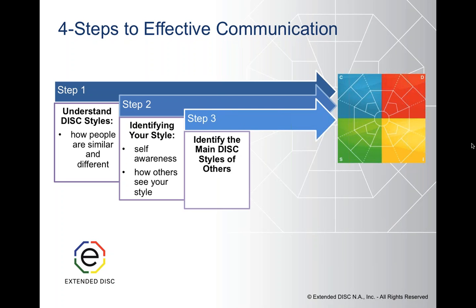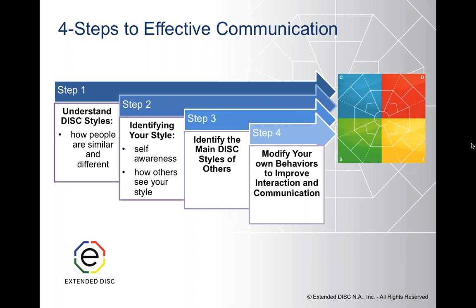Step three is one of the strengths of the DISC model — identifying the main DISC styles of others. It's one thing to try to figure out what somebody is, but if you just have to bring it down to: is their primary style a D, I, S, or C? So only four styles that you have to recognize. Step four is how do we modify our own behaviors to improve interaction and communication — that's where we're trying to get to.